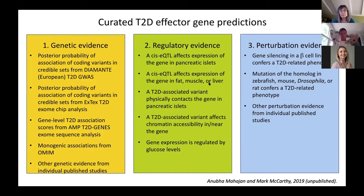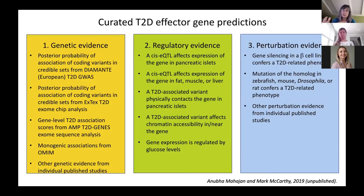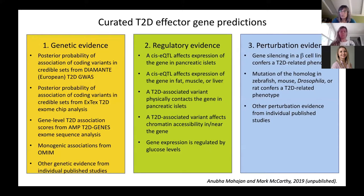They also considered other one-off studies that might have been on a small population or an individual gene, but they knew about these studies and gathered those that provided genetic evidence. They also considered regulatory evidence — they looked at whether cis-EQTLs affected expression of a gene in pancreatic islets, also in fat, muscle, or liver. They looked at chromatin conformation to see if a T2D-associated variant might contact the gene, whether the variants affected chromatin accessibility, and at a study that looked at glucose regulation of gene expression. Finally, they looked at perturbations and mutant phenotype evidence, including silencing candidate genes in a beta cell line and whether mutation of the homologue in model organisms might confer a T2D-related phenotype.